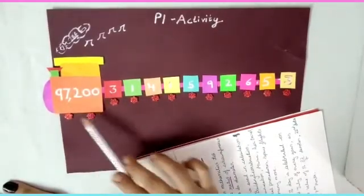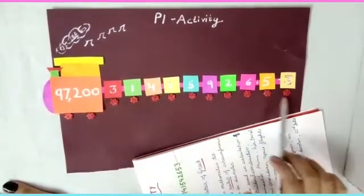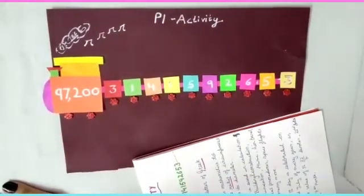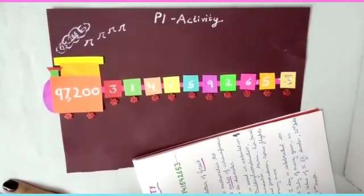Now to make the wheels, you can cut out any color. You can take black also, you can take red also. Any color and you can make the circles. I have cut the flower shape, a slightly flower shape to depict the wheels.